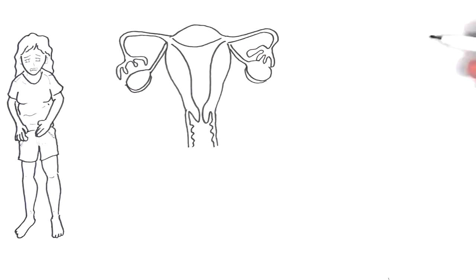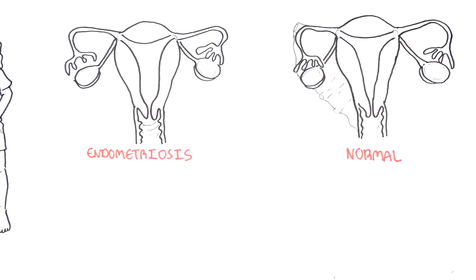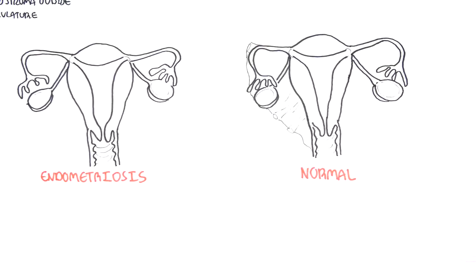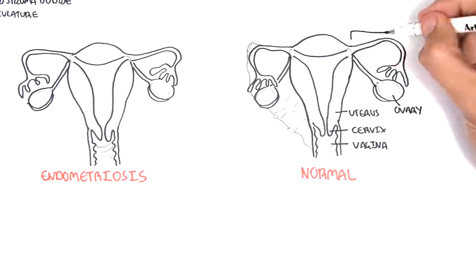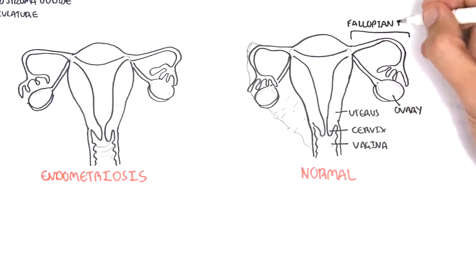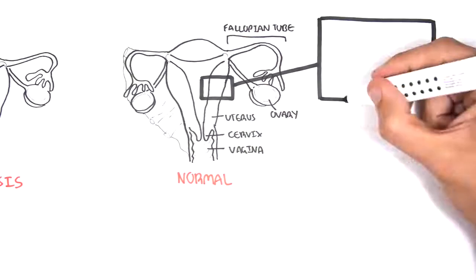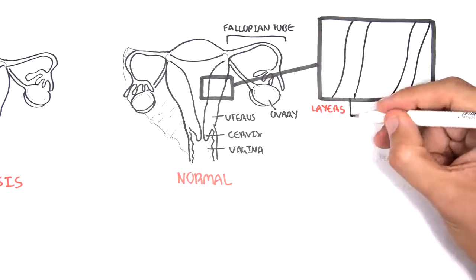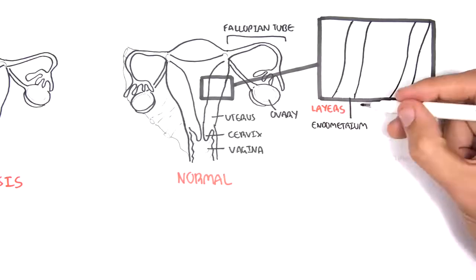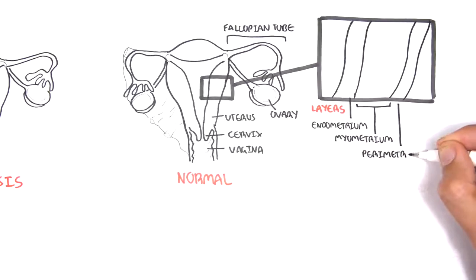Let's first revise some anatomy to understand endometriosis. Here is a female genital tract: the vagina, cervix, uterus, and ovary. The fallopian tube is here, also known as the uterine tube. Zooming into the uterus, let's talk about the layers. The innermost layer, closest to the uterine cavity, is called the endometrium, and below it is the muscular myometrium, and below that is the perimetrium.